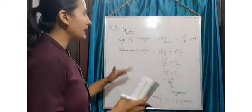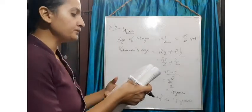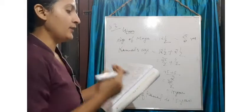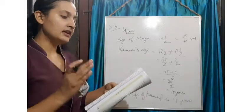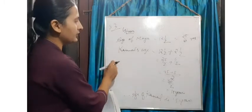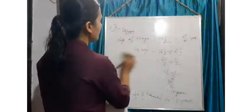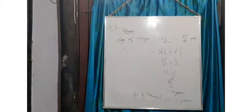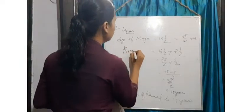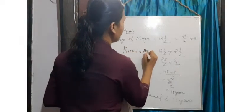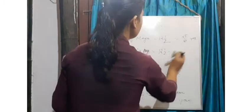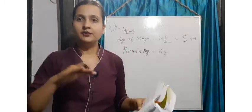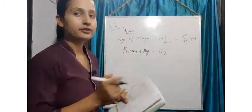Now, similarly, we will find the age of Kiran. Kiran is younger by one and a half years than Maya. So Kiran's age — Kiran is younger by one and a half years, which means we have to subtract one and a half years from Maya's age.